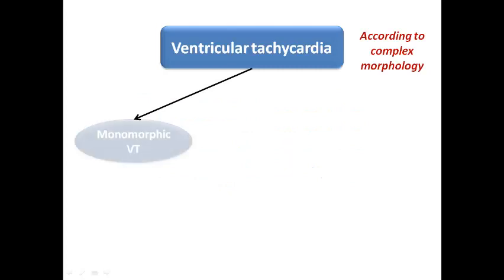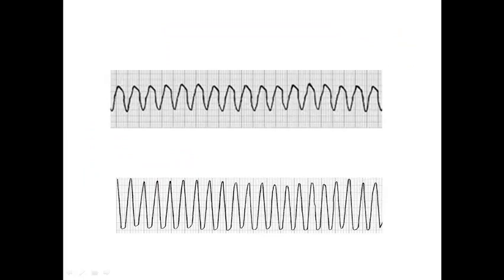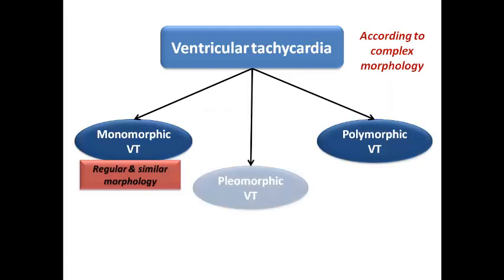Now let's classify VT according to morphology. The most common pattern is monomorphic VT — from its name, it shows just one morphology with similar complexes throughout, and the rhythm is regular. For example, we can see wide-complex tachycardia in which all complexes show the same morphology and regular rhythm — this is monomorphic VT.